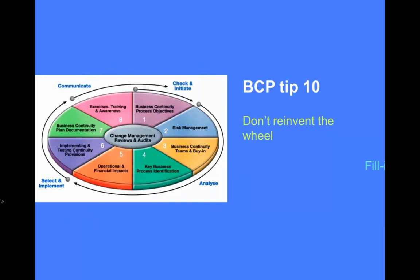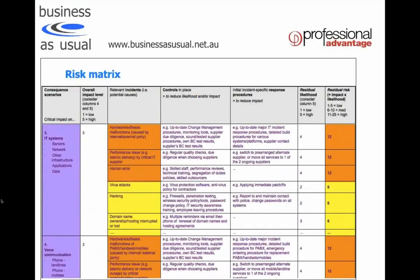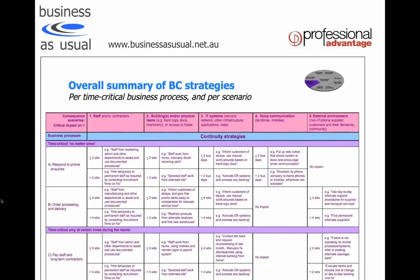Tip 10: Don't reinvent the wheel. Use templates and frameworks you're comfortable with — fill in the blanks rather than starting from a blank piece of paper, which wastes enormous time. Instead of a novel-style 500-page BCP, use colour-coded, matrix-style, or bullet-point-style models that communicate things across the organisation far more effectively.